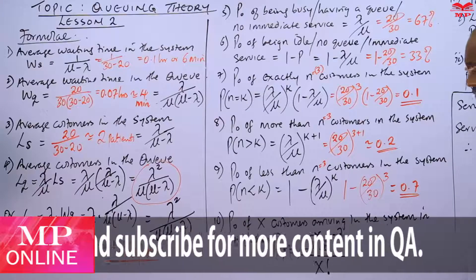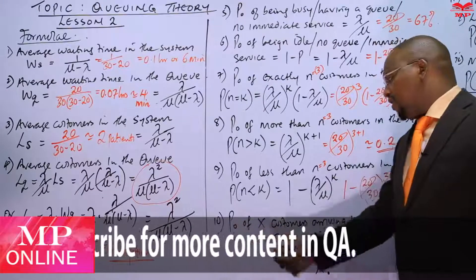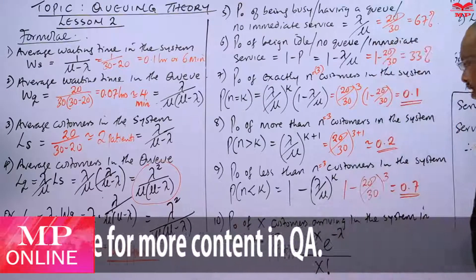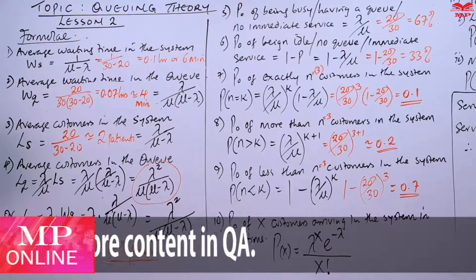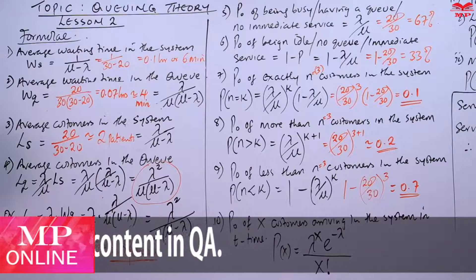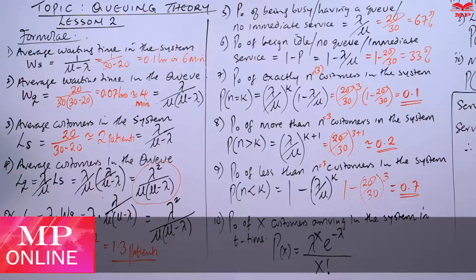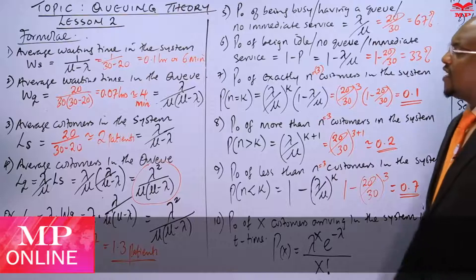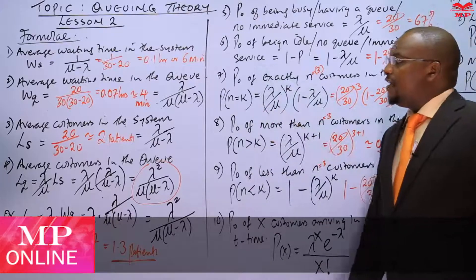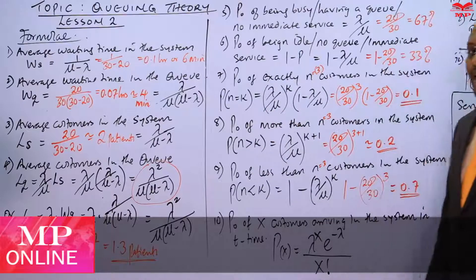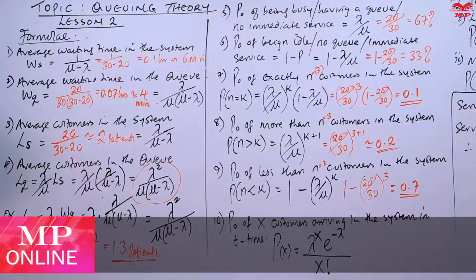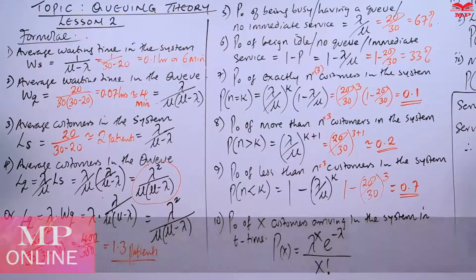Number ten is the probability of X customers arriving in the system in T time. Here we have to make our own question. Assuming the arrival rate is 20 customers or 20 patients per hour...